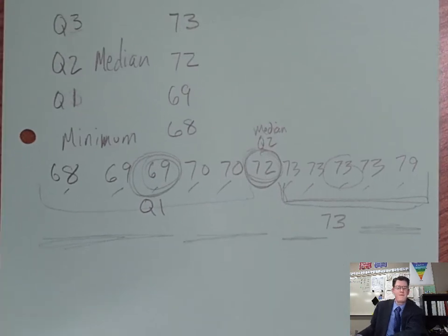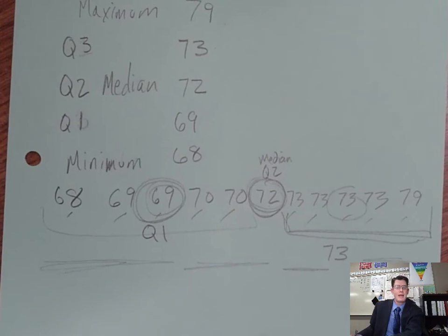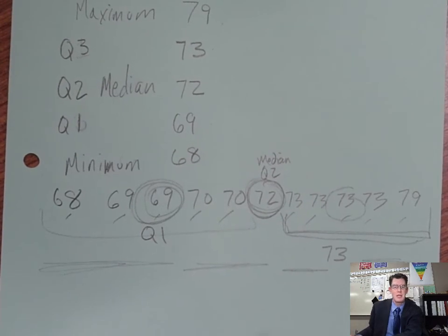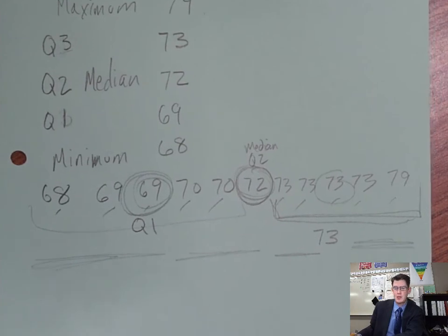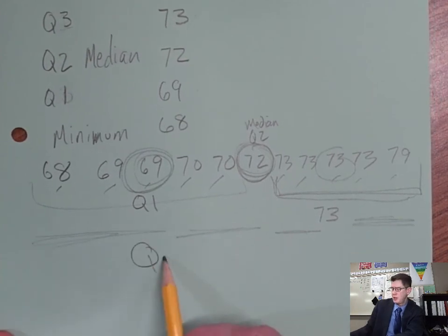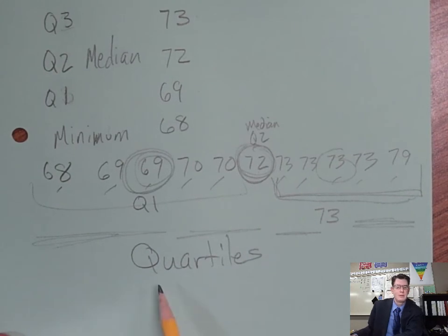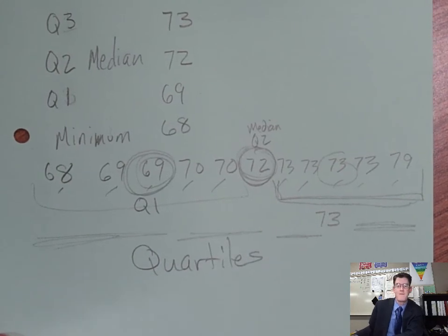It kind of helps us see what the grouping is when we see the numbers split up into four different quartiles. We call these quartiles because we split it up into fourths.